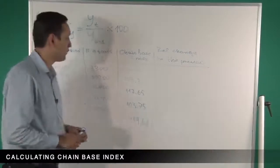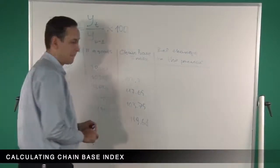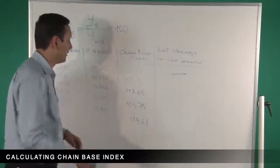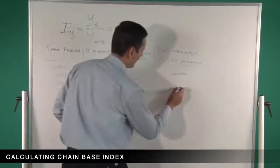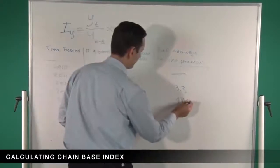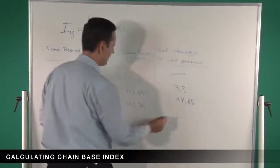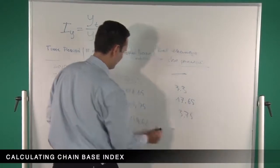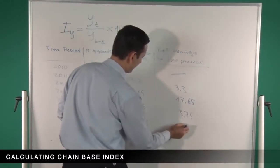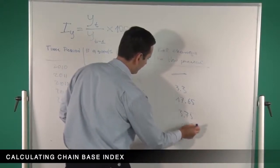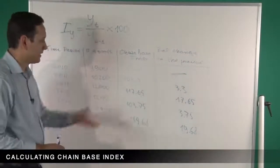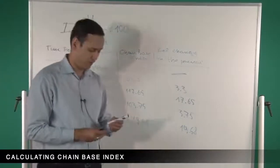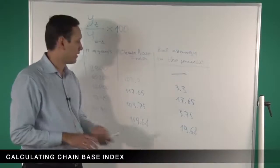For the column relative change to the previous year, we write down the numbers subtracting 100 from them: 3.3, 17.65, 3.75, and 19.68. This can also be used as a percentage change, which is exactly what it shows.